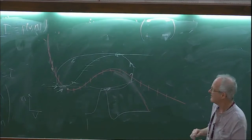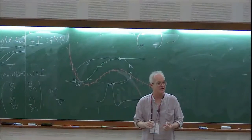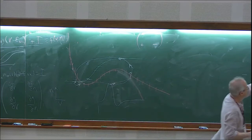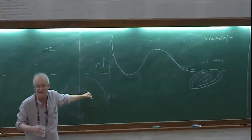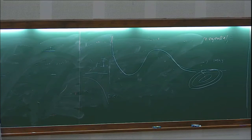Now let's inject some current. Injecting current makes I bigger, which pushes the v-nullcline up. The v-nullcline shifts upward, and suppose it moves into this region. Now I have an equilibrium point where the slope of the v-nullcline is positive.